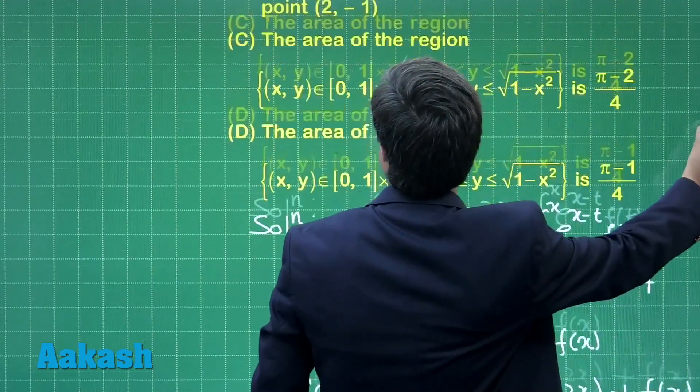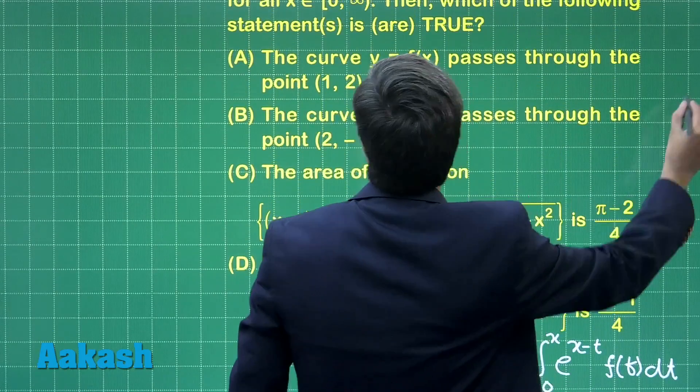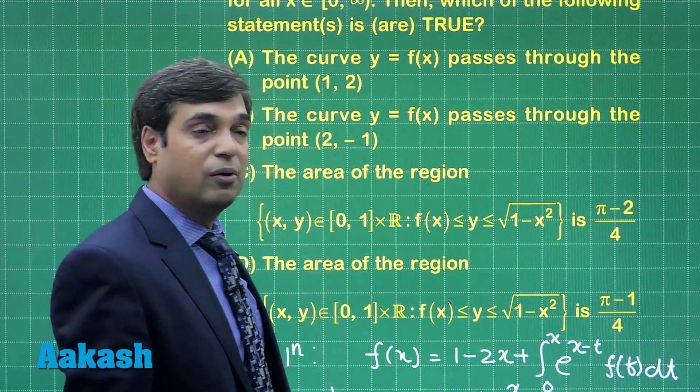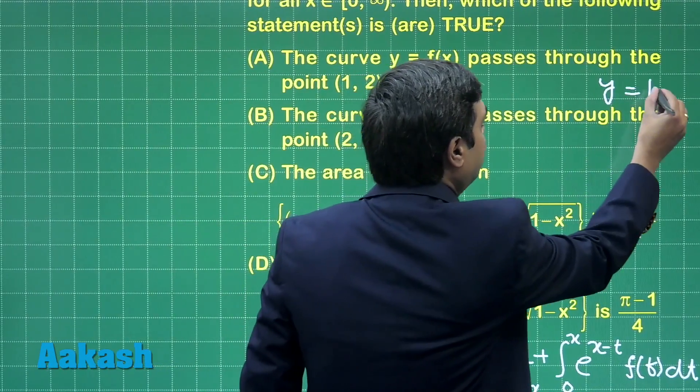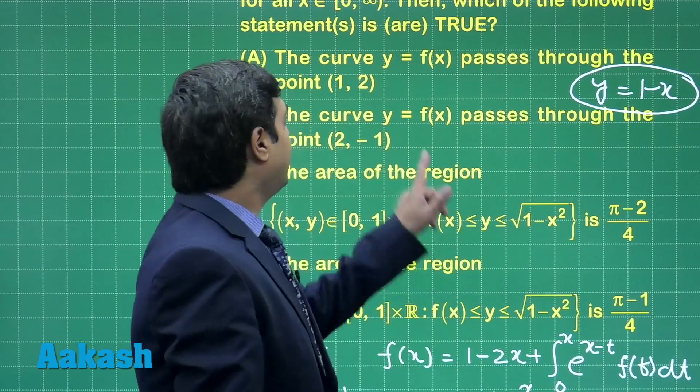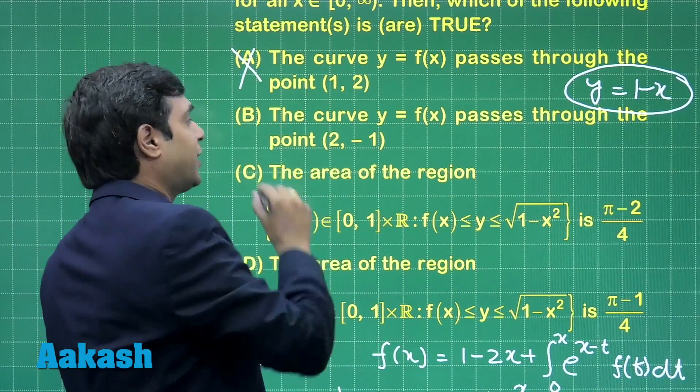Now let us go for the options. The curve passes through (1, 2): we obtain curve as y equals 1 minus x. Let us write here clearly option 1 is not correct.